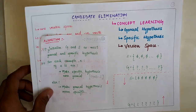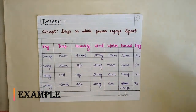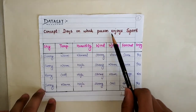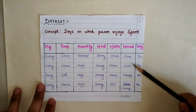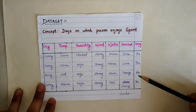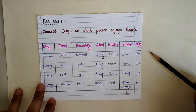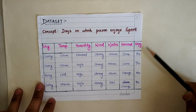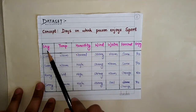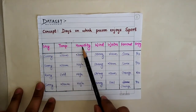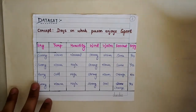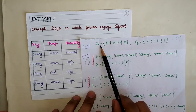Let's understand it with an example. Consider this dataset — the concept we are learning is the days on which a person enjoys a sport. The possible output is yes or no: yes is a positive example, no is a negative example. We have six attributes: sky, temperature, humidity, wind, water, and forecast.